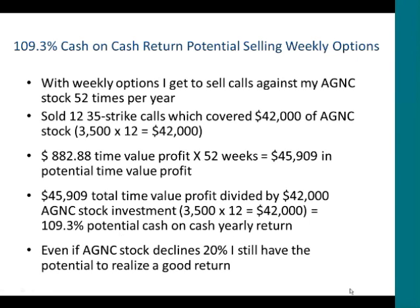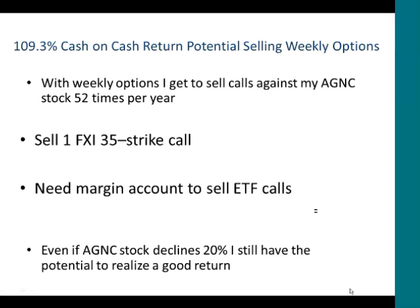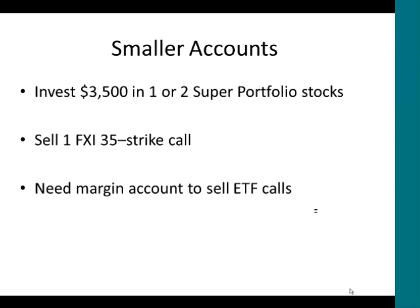Even if American Capital stock declines in price, collecting this 109% cash-on-cash return would still result in a good return. Because you're selling weekly calls 52 times a year, you collect a lot of cash-on-cash income. If you have a smaller account, you could invest $3,500 in one or two super portfolio stocks and sell one China ETF 35-strike call — that covers about $3,500 in stock — to create this spread in a smaller account.